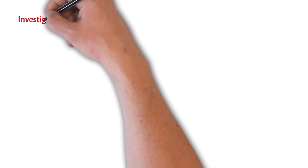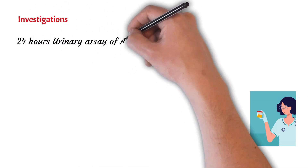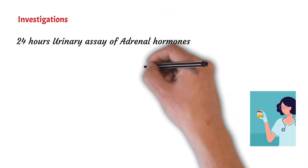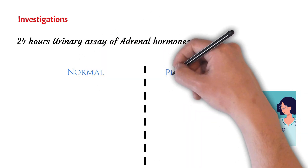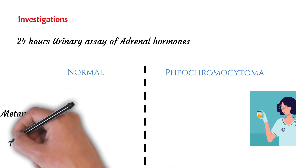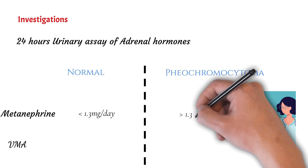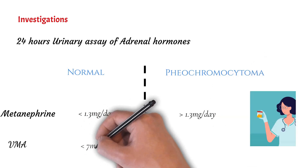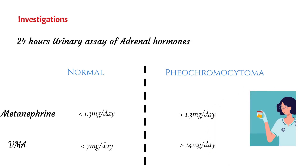Now we shall discuss the investigation of pheochromocytoma. First and foremost, a 24-hour urinary assay of adrenal hormones is done. The metanephrine value is less than 1.3 mg/day in normal patients while it is more than 1.3 mg/day in tumor patients. VMA value is less than 7 mg/day in normal patients while it is more than 14 mg/day in cases of pheochromocytoma.